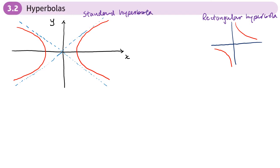Looking at the standard hyperbola in more detail: where the graph cuts the x-axis, it crosses at a and minus a, similar to the ellipse. We also need to know the equations of the asymptotes — one is y equals minus b over a times x, and the other is y equals b over a times x. Like the ellipse, we have values a and b with slightly different purposes.